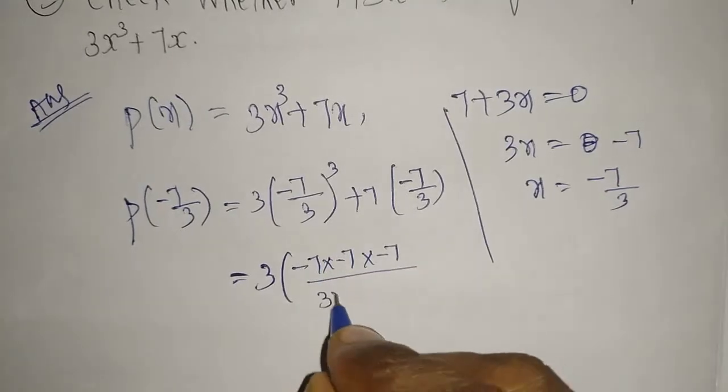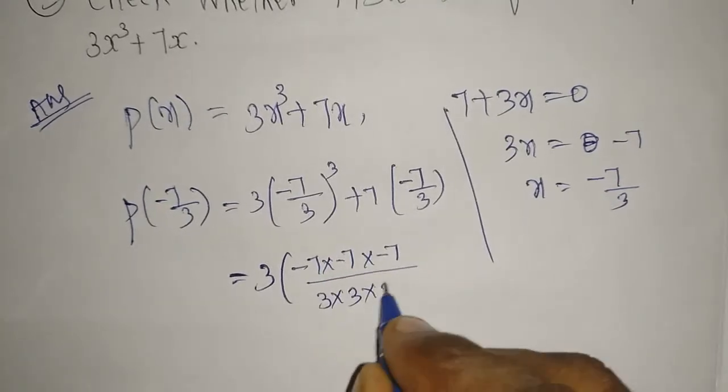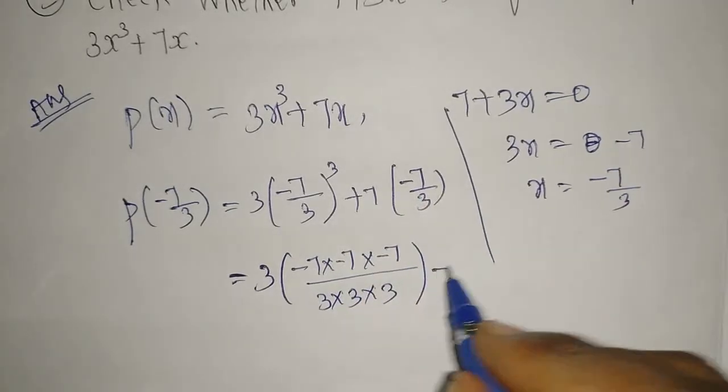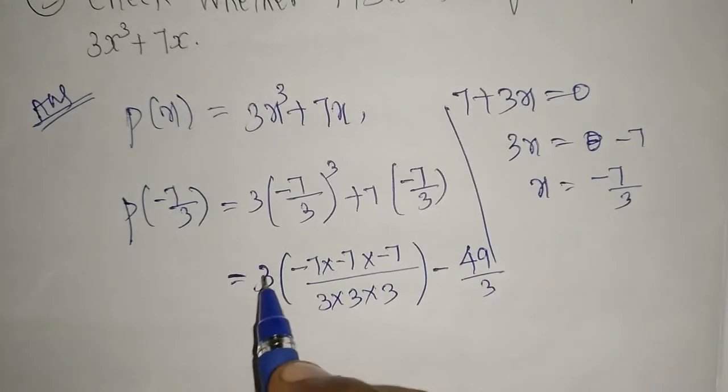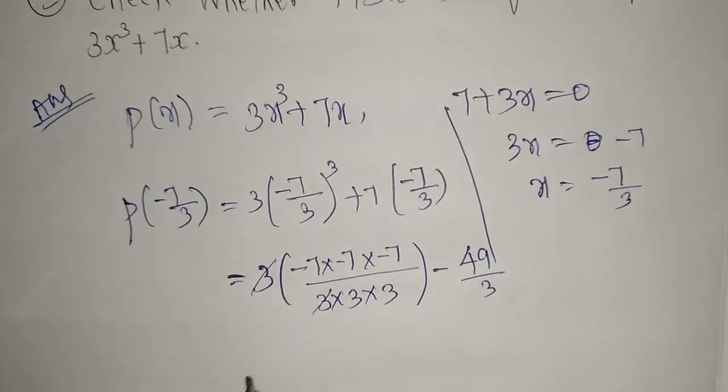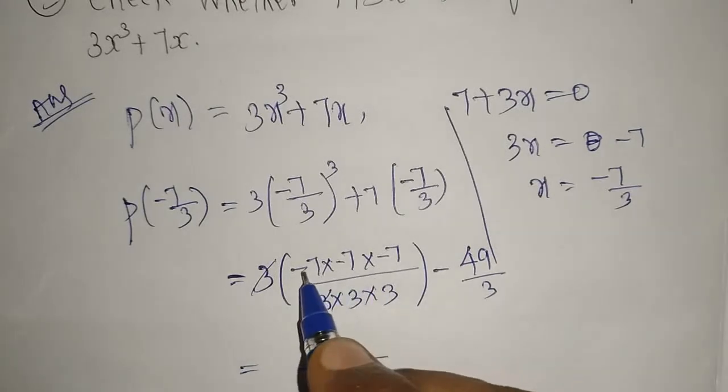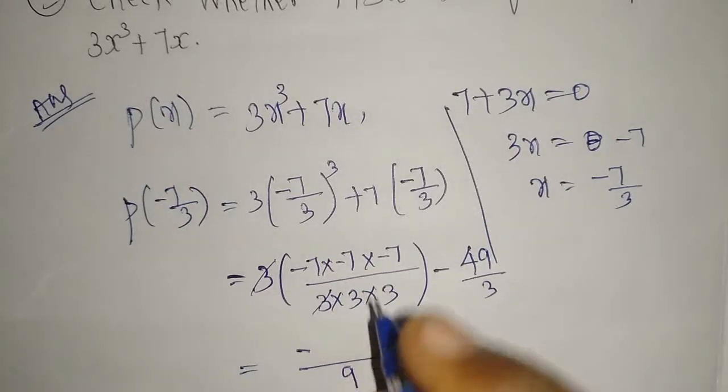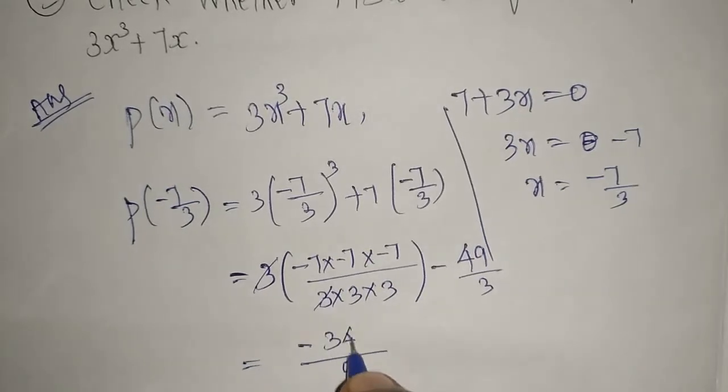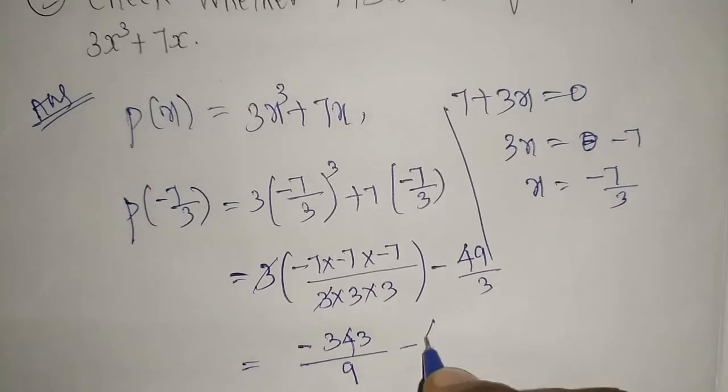Plus into minus minus, 7 times 7 is 49 by 3. So here one 3 and one 3 will cancel. Now remaining, 3 times 3 is 9 here. 7 times 7 is 49, minus 7, plus plus minus minus, 49 times 7 is, 3 times 43 minus 49 divided by 3.